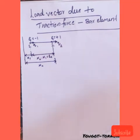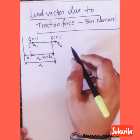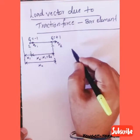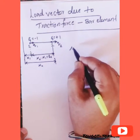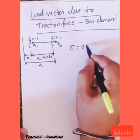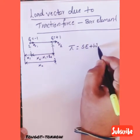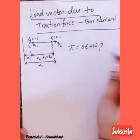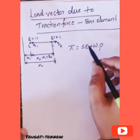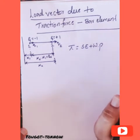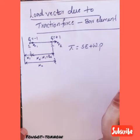To derive your load vector, the basic requirement we discussed is: pi equals strain energy plus work potential. We know that strain energy gives you the stiffness matrix, and work potential gives the load vectors.